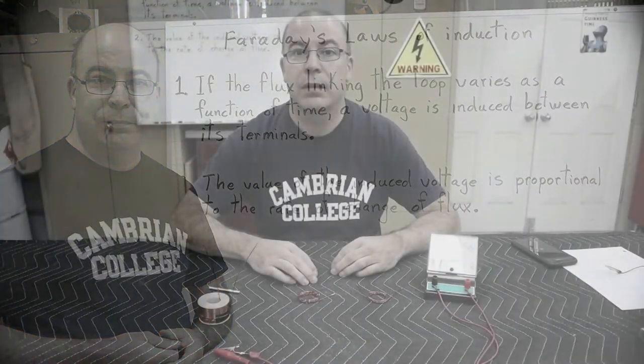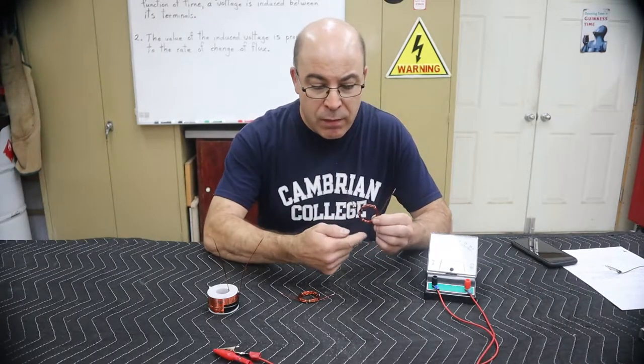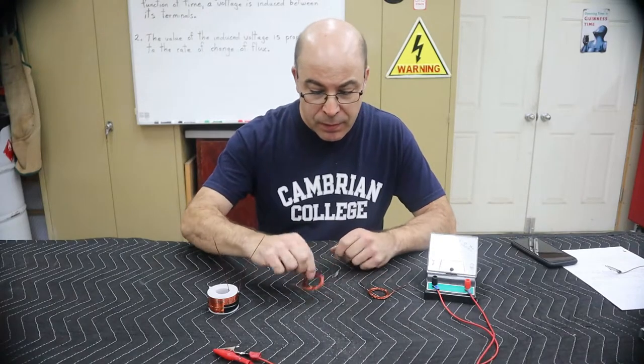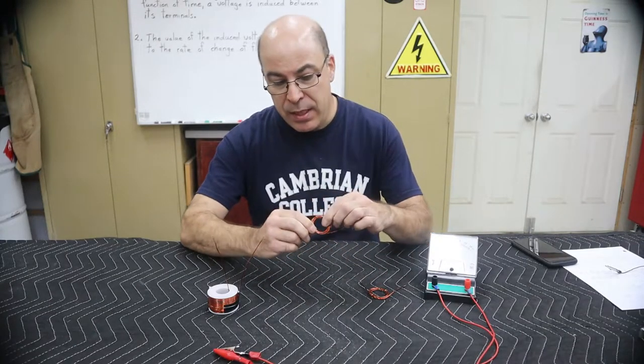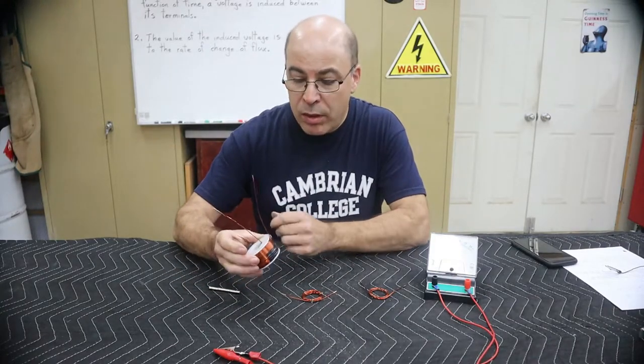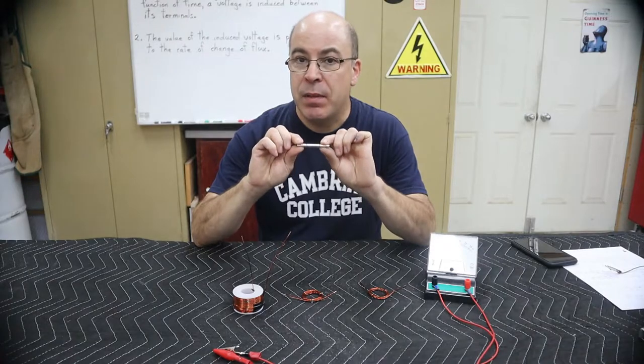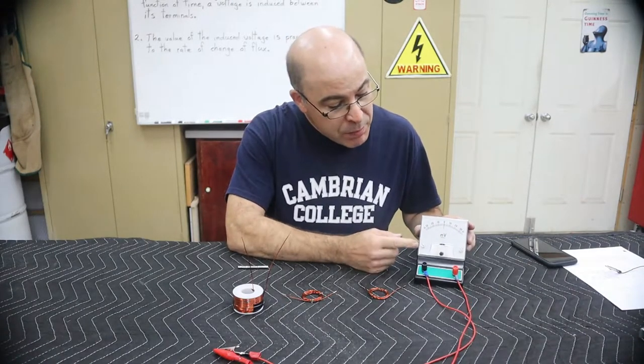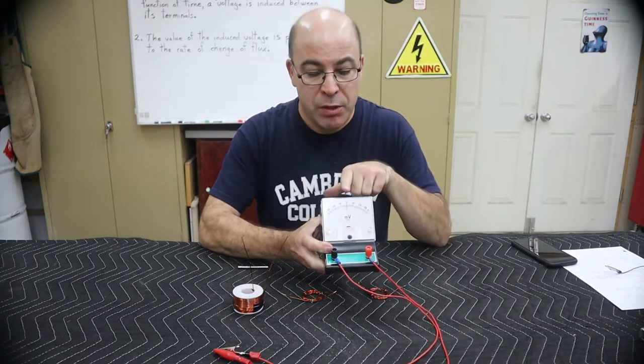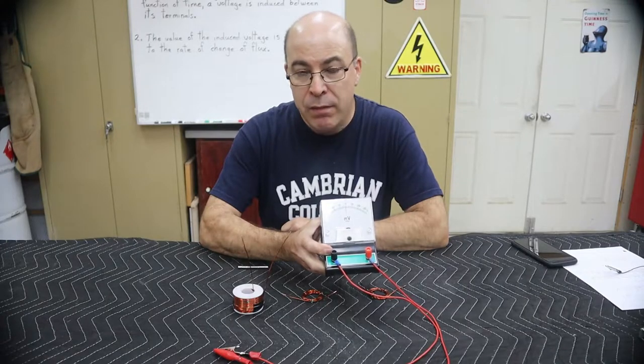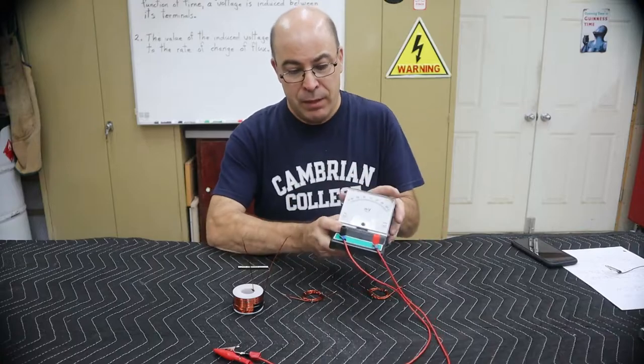In order to facilitate today's demonstration, I have assembled three different coils of wire. The first one has five loops of wire, the second has ten loops, and finally I've wound several loops of wire onto this plastic core. We're going to be using these magnets to provide magnetic flux, and this meter is set to read millivolts with a zero center so it lets us know the polarity of the voltage we're inducing.